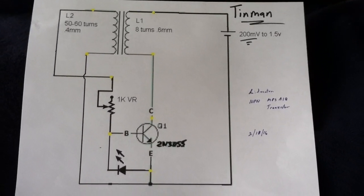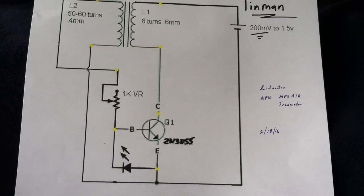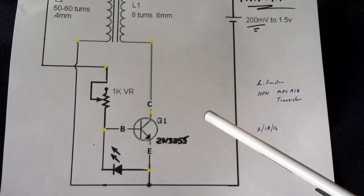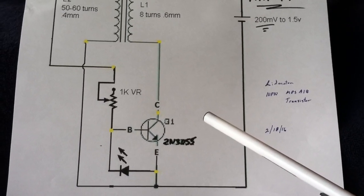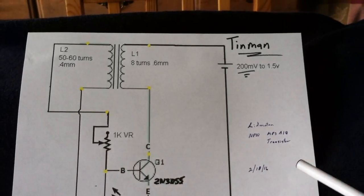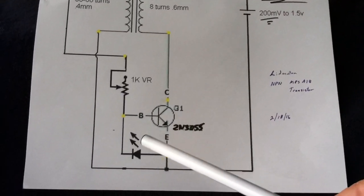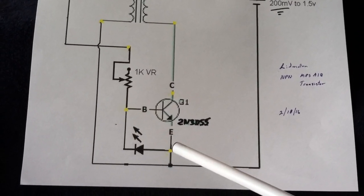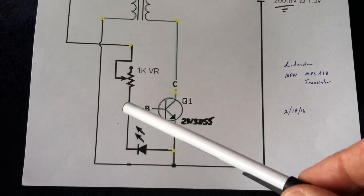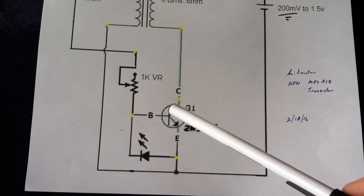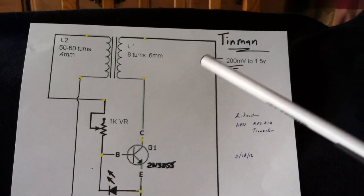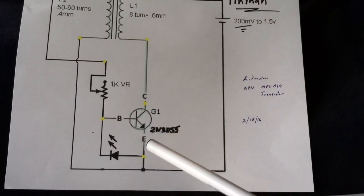It's basically John Bedini's SSG, only on John's circuit, you'd come off here with the 1N4007 diode and charge a battery. This is not an LED in his circuit. This is just a regular 1N4001 diode to snap the transistor on and off sharply. But this was Tin Man's idea, was to use the LED on the trigger coil circuit.